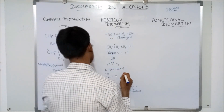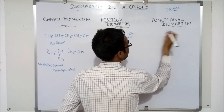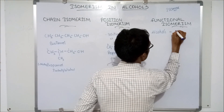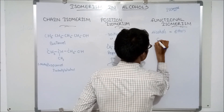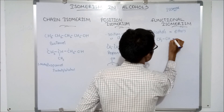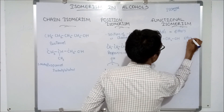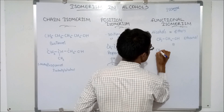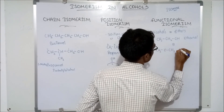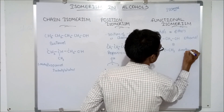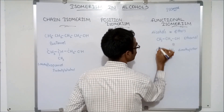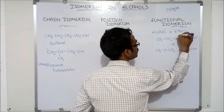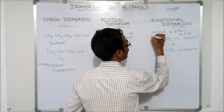Functional isomers means the molecular formula will be the same but the functional group will be different. Alcohols show functional isomerism with ethers — very important. For example, CH3-CH2-OH, which is ethanol, shows functional isomerism with CH3-O-CH3, dimethyl ether. The molecular formula is the same but the functional group is different: this is an alcoholic functional group (ROH) and that is an ether functional group (ROR).